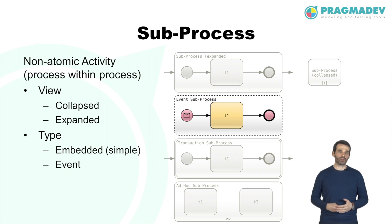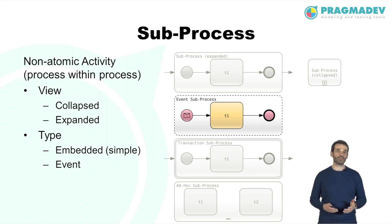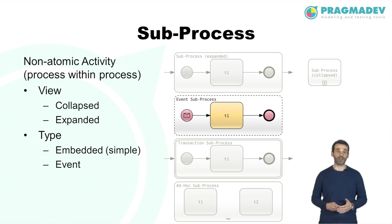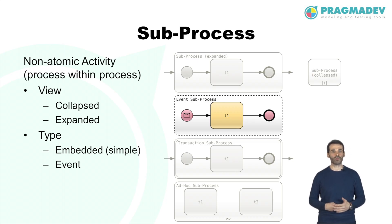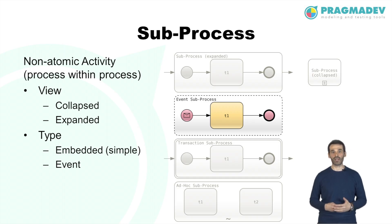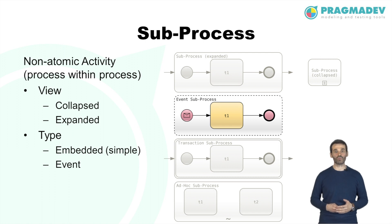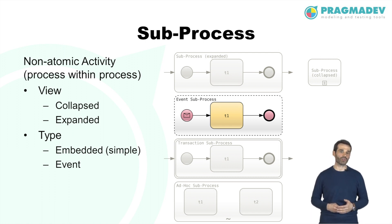An event subprocess is a specialized subprocess that is not part of the normal flow of its parent process. Hence, it has no incoming or outgoing sequence flows. Unlike a standard subprocess triggered by the parent process flow, an event subprocess has a start event with a trigger. Each time the start event is triggered while the parent process is active, the event subprocess will start.